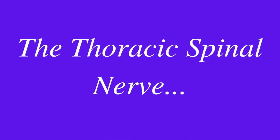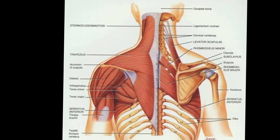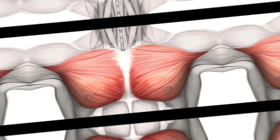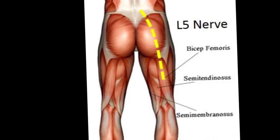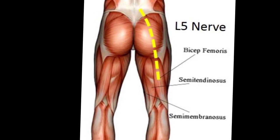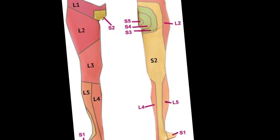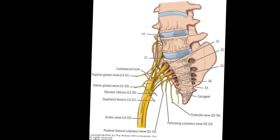The thoracic spinal nerves T1 to T12 supply the upper and mid-back, chest muscles, and some part of the abdomen. The lumbar spinal nerves L1 to L5 supply the lower part of the abdomen, lower back, buttocks, external genital organs, and parts of the legs. The sacral spinal nerves S1 to S5 supply the lower part of the legs, feet, external genitals, and the area around the anus.